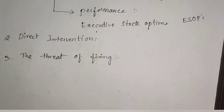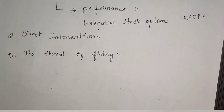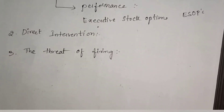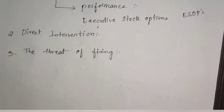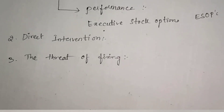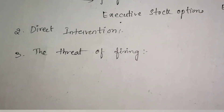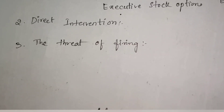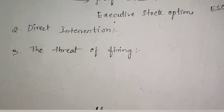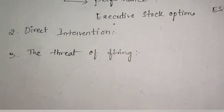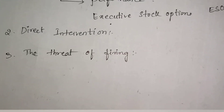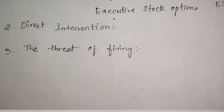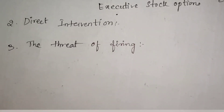The third mechanism is the threat of firing. If the principal threatens to fire the agent anytime his performance is not in line with the principal's goals, ultimately what will happen is that only until the agent gets hired by some other company will he act as an employee of this organization. Once he gets a chance, he will move out. So, threat of firing is an immature act by the organization.